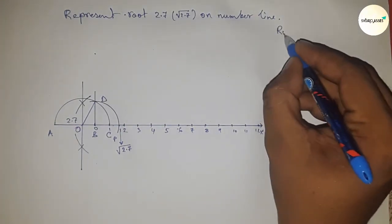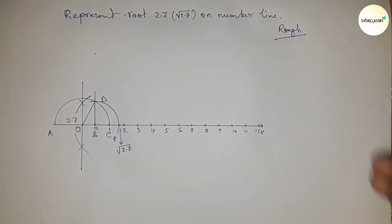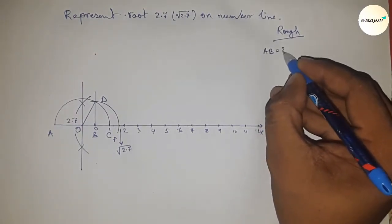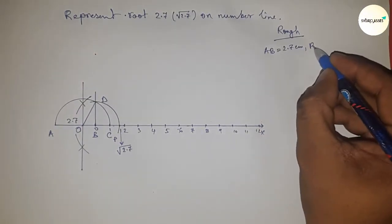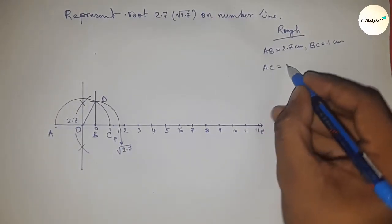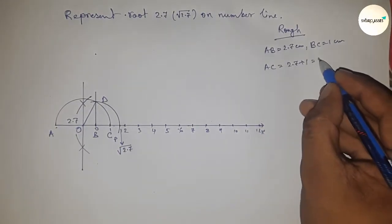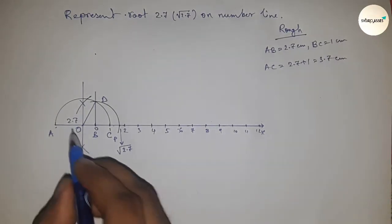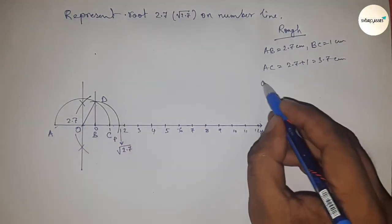Now, discussing the back calculation of root 2.7. Here, given AB equals 2.7 centimeter and BC equals 1 centimeter, so AC equals 2.7 plus 1 equals 3.7 centimeter. Next, the radius OA equals OC equals OD equals 3.7 by 2 centimeter.